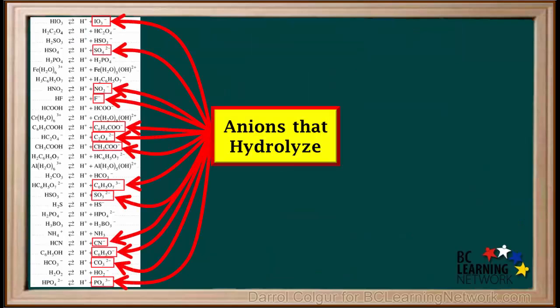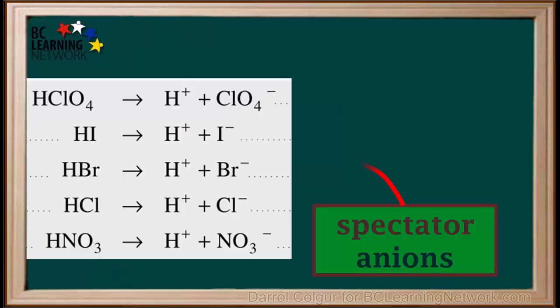So now we've looked at some anions that do hydrolyze. And we must remember that anions that do not hydrolyze, these five spectator ions, are on the top right of the acid table.